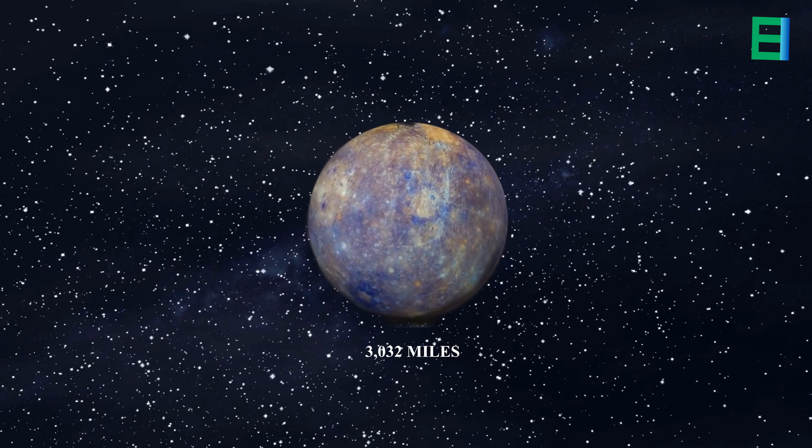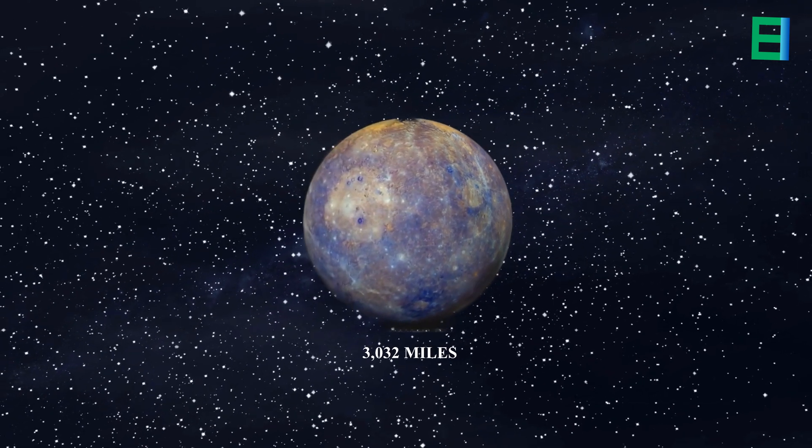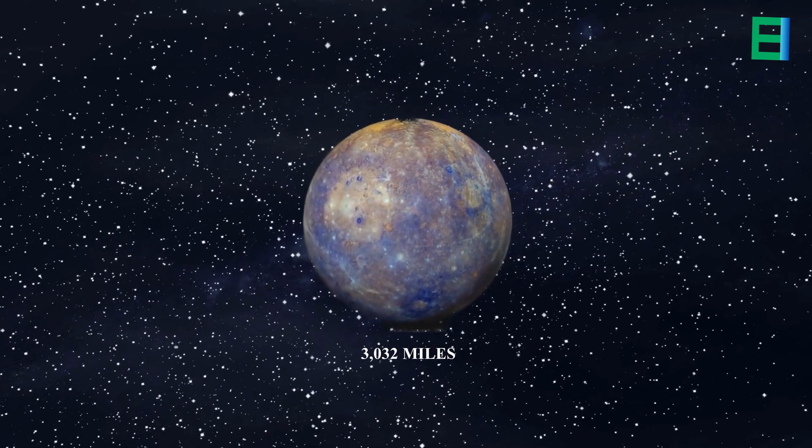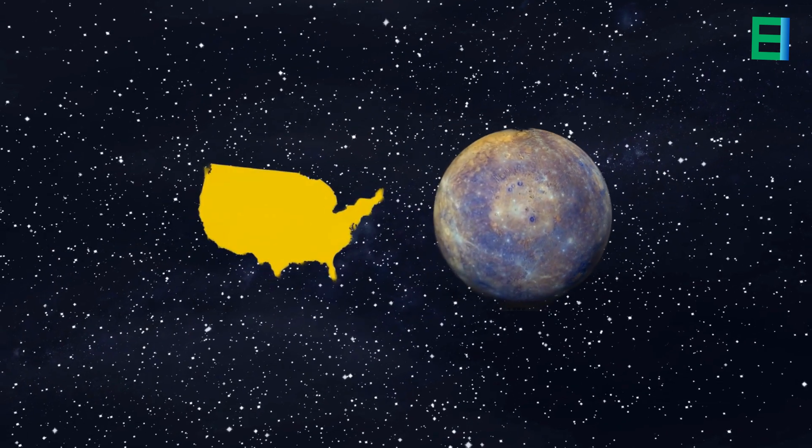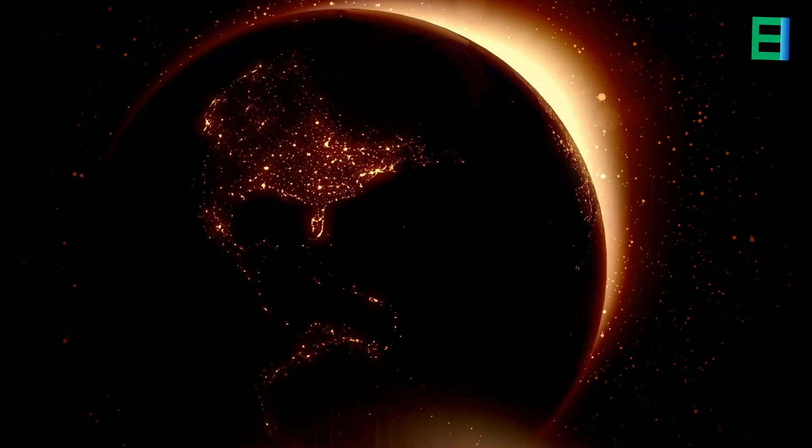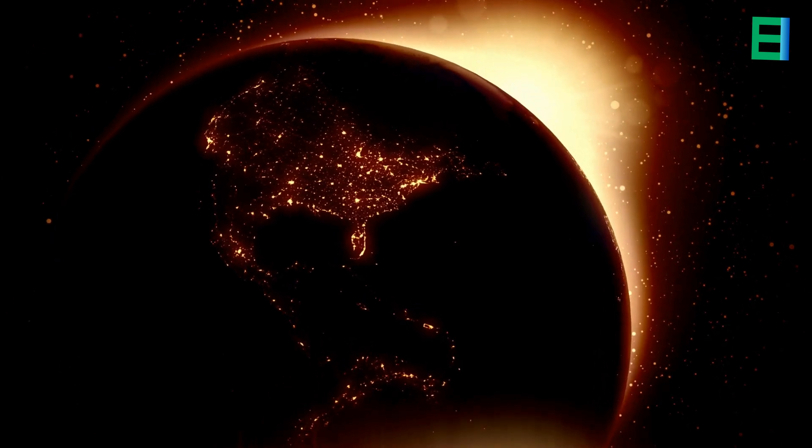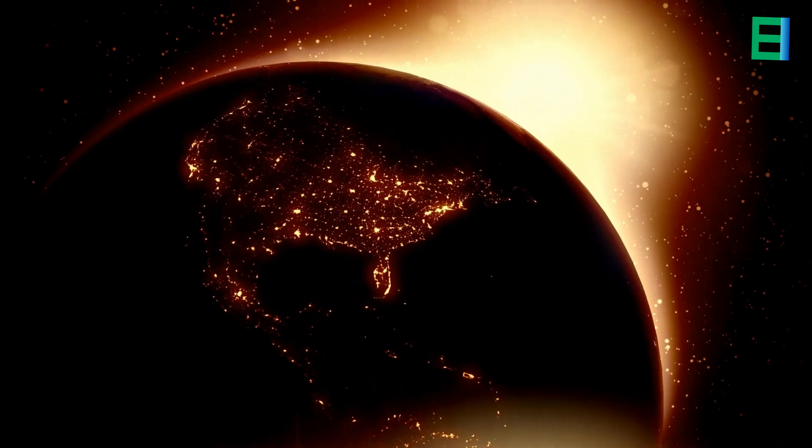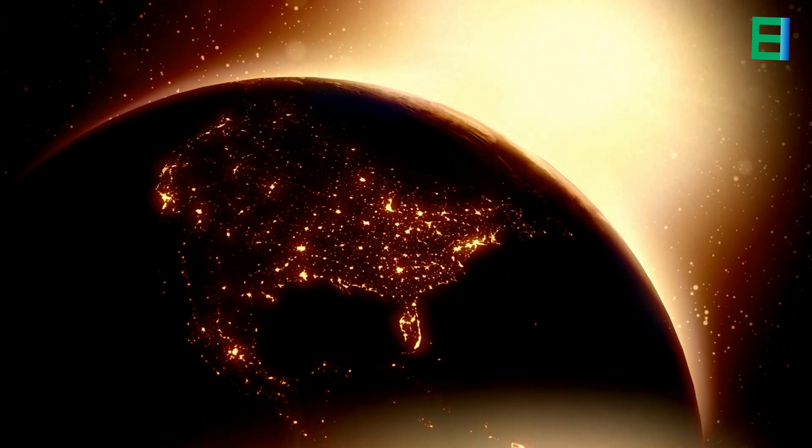Its diameter measures 3,032 miles, making it akin in size to the continental United States, albeit slightly larger. While Mercury may claim the title of the smallest planet in our solar system, it remarkably ranks as the second densest.